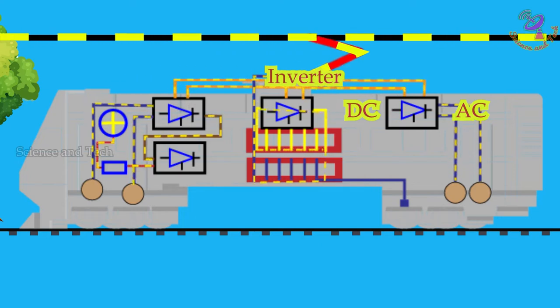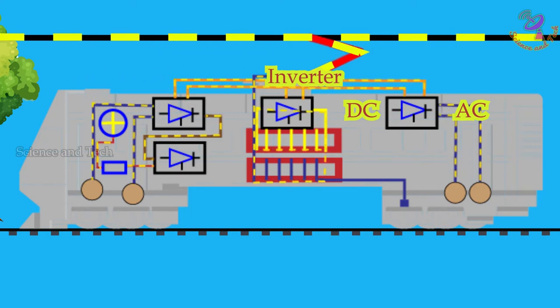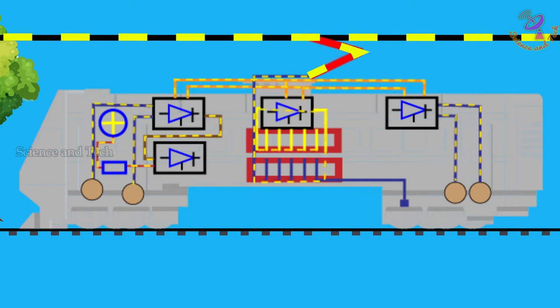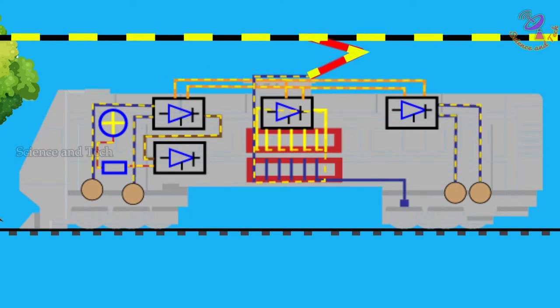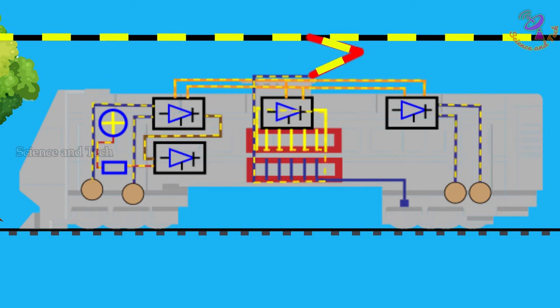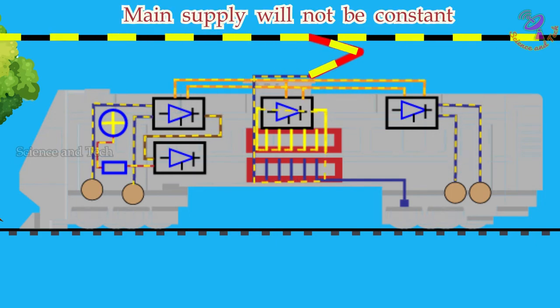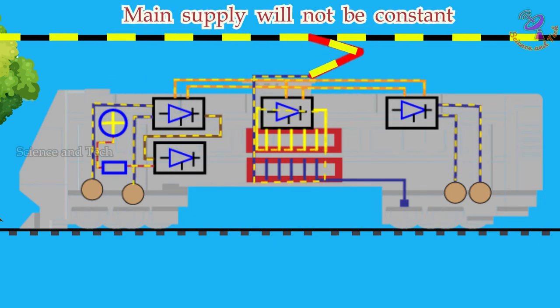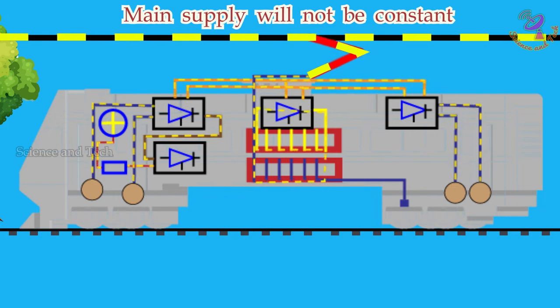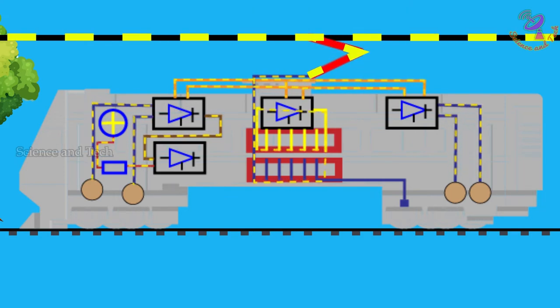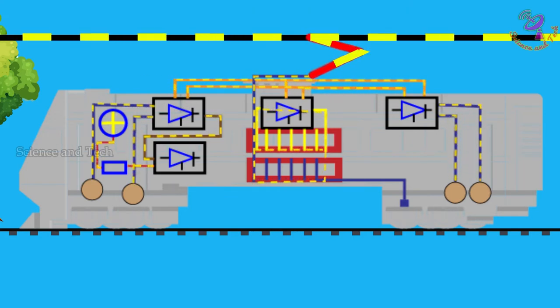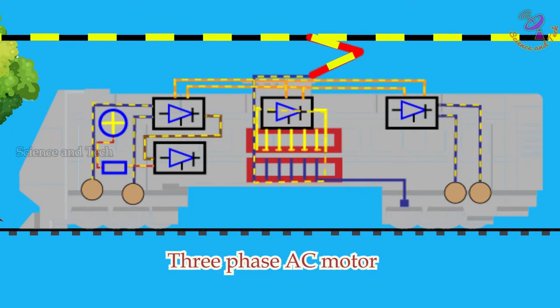You may ask the question why is electricity converted from DC to AC that is already converted from AC to DC? Here is the reason for this double type conversion. The AC power supply which is passing through the main power line will not be at stable voltage, there is a fluctuation at every time. This inverter gives constant voltage to train to power constantly.